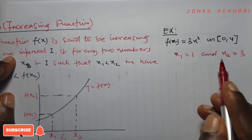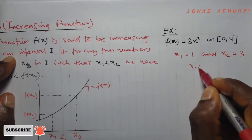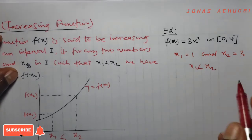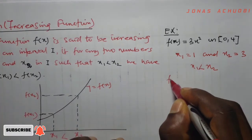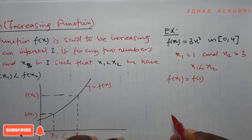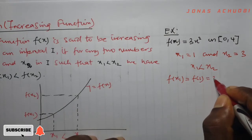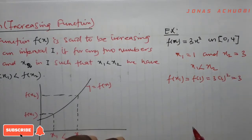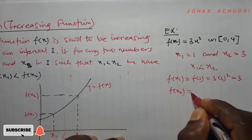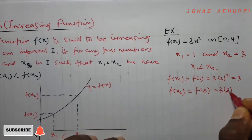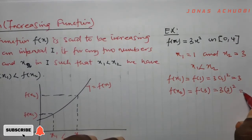The points 1 and 3 are such that x1 is less than x2, because 1 is less than 3. The next we want to find out is the value of f of x1. Now f of x1 means f of 1, and f of 1 into the function means 3 times 1 squared, and that gives us 3. f of x2 means f of 3, and that gives us 3 times 3 squared. And 3 squared is 9, so that gives us 27.